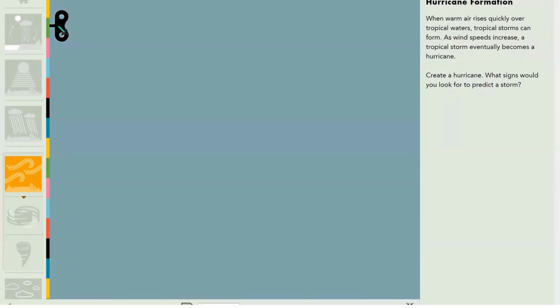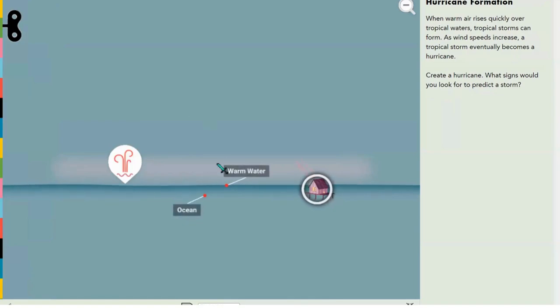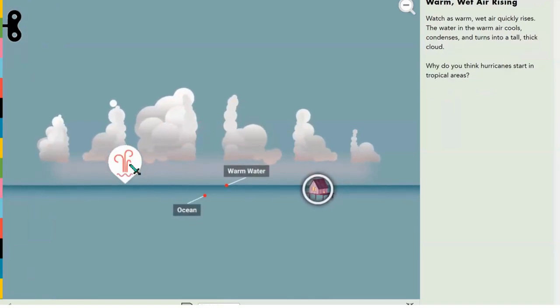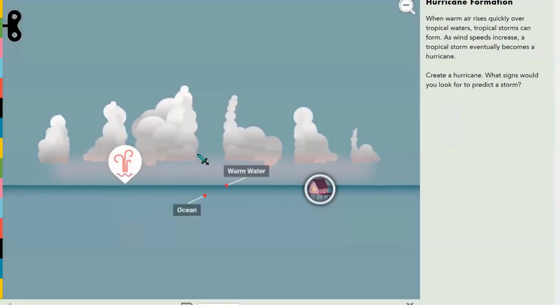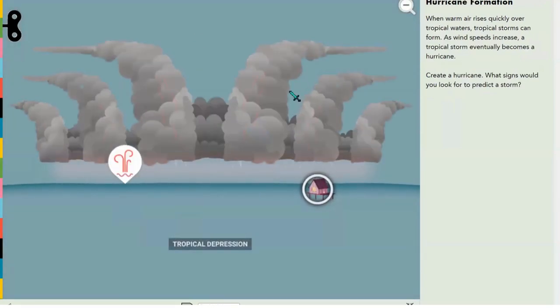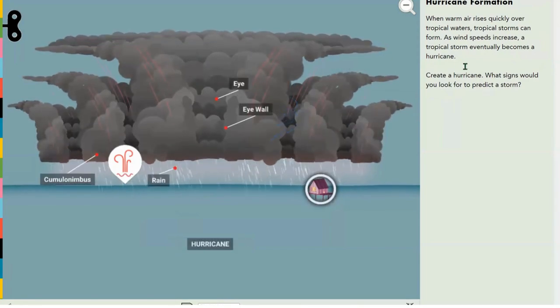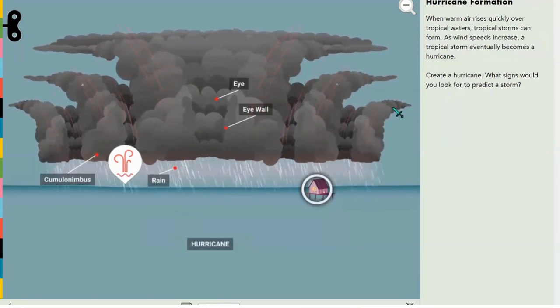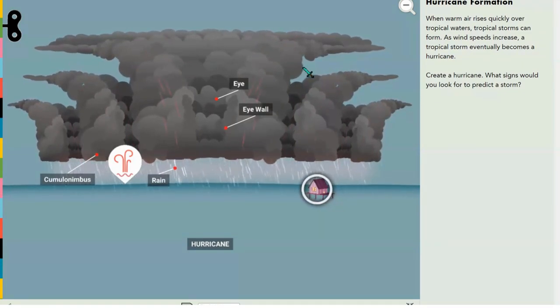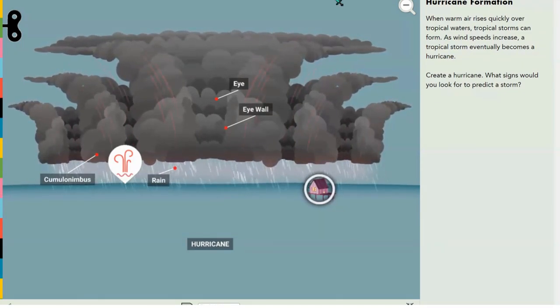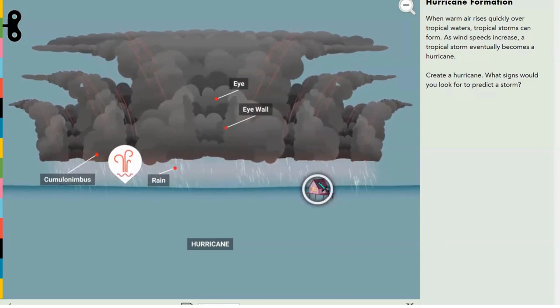How does a hurricane even form? Ah, there's nothing really. Now we can see here that warm air goes up and releases water vapor. Warm air rises fast over tropical waters. Tropical storms have formed, and as wind speeds increase, a tropical storm eventually turns into a hurricane.